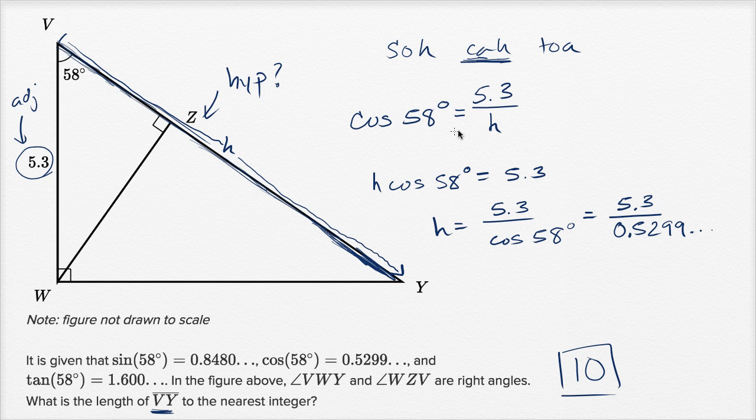Now if any of this that I just did look like Greek to you, and you are not Greek, I encourage you to watch the basic trigonometry videos on Khan Academy. Now this is an interesting problem because this was a pretty straightforward application of the definition of cosine, and they just confuse you a little bit by drawing this other right triangle here.